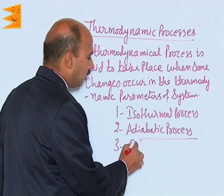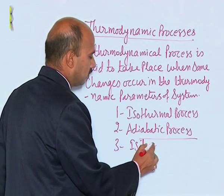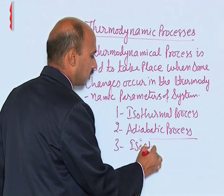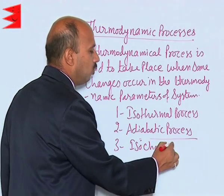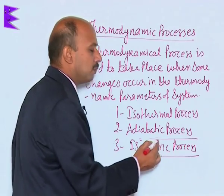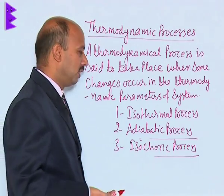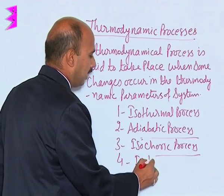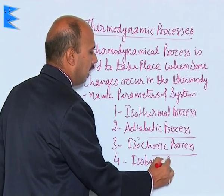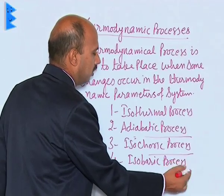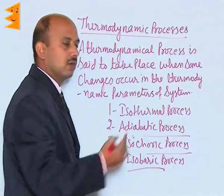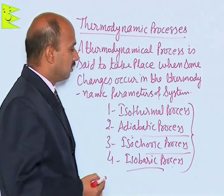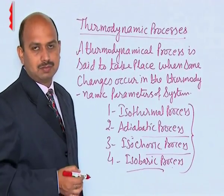The third one is the isochoric process — isochoric means volume is kept constant and then the process takes place. The fourth one is the isobaric process — in isobaric, pressure is kept constant. These are the four types of thermodynamical processes, which will be discussed one by one in detail.